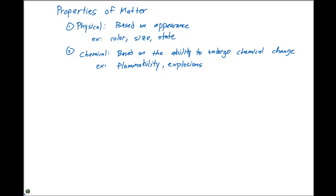So how can we characterize and how can we detect each of these changes? What is evidence of these types of changes? Because as chemists, we need to be able to identify what type of change is happening.